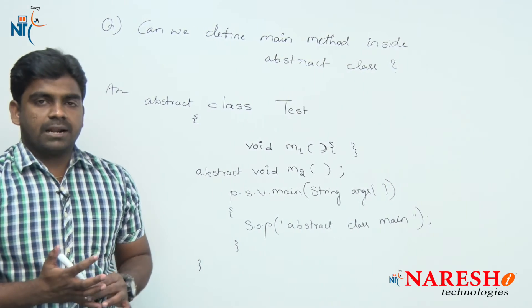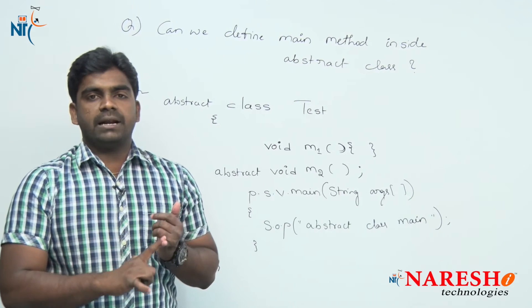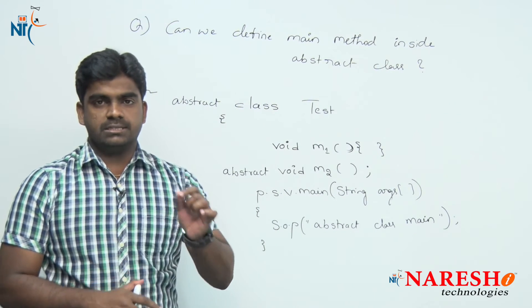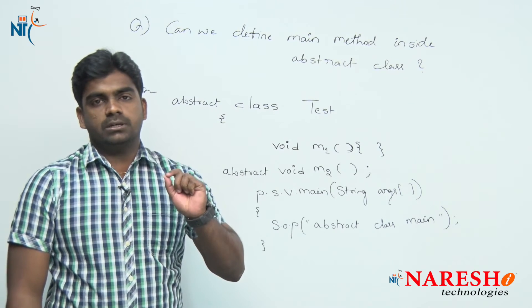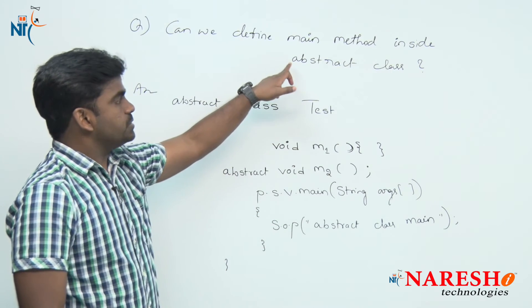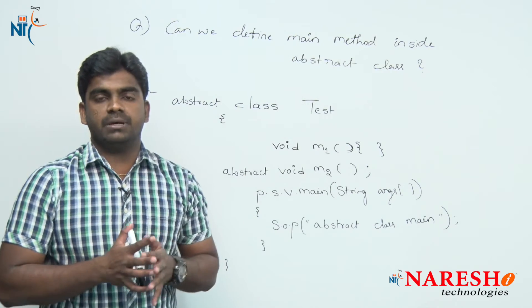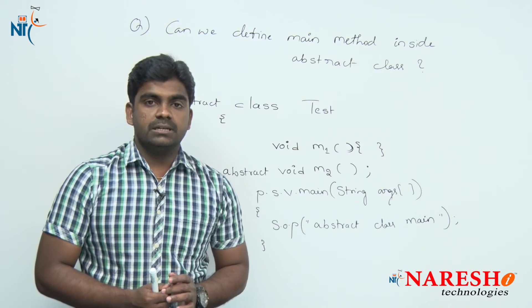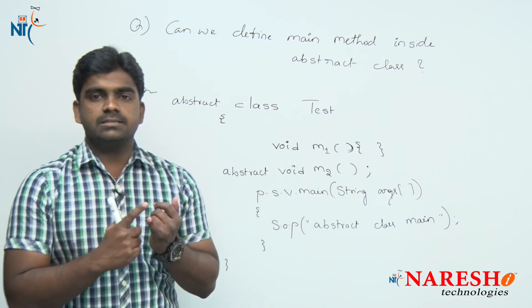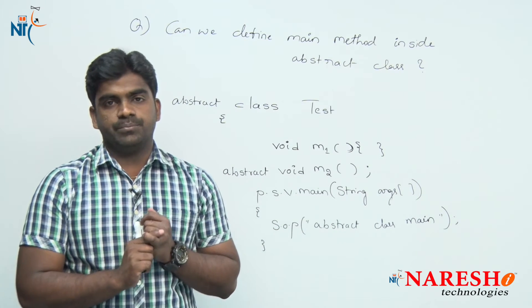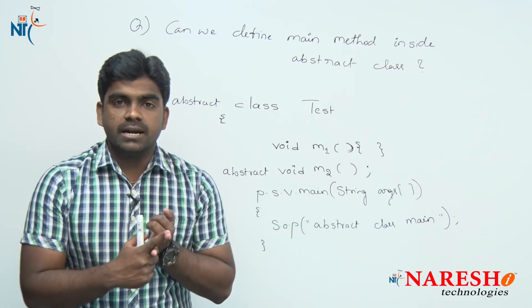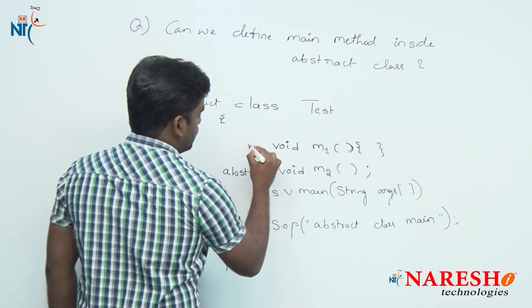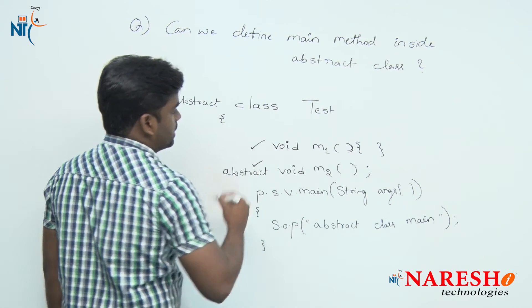Whenever you compile and run this application, no compile time error and no runtime error. The reason: it is allowed inside the abstract class to define the main method. Why? The reason: main method is a static method. How can we access static methods? Using class name. How can we access non-static methods? Using object address.